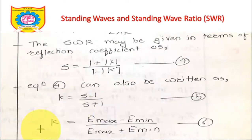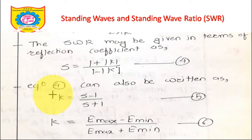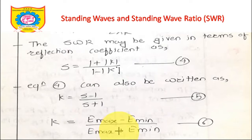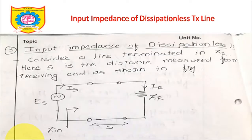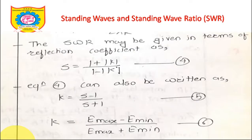To summarize: SWR = Emax/Emin; S = (1 + |K|)/(1 − |K|); K = (S − 1)/(S + 1); and K = (Emax − Emin)/(Emax + Emin). In the next lecture we will discuss the input impedance of the dissipationless line and how these equations can be used for further investigation of the transmission line. Thank you and happy learning.